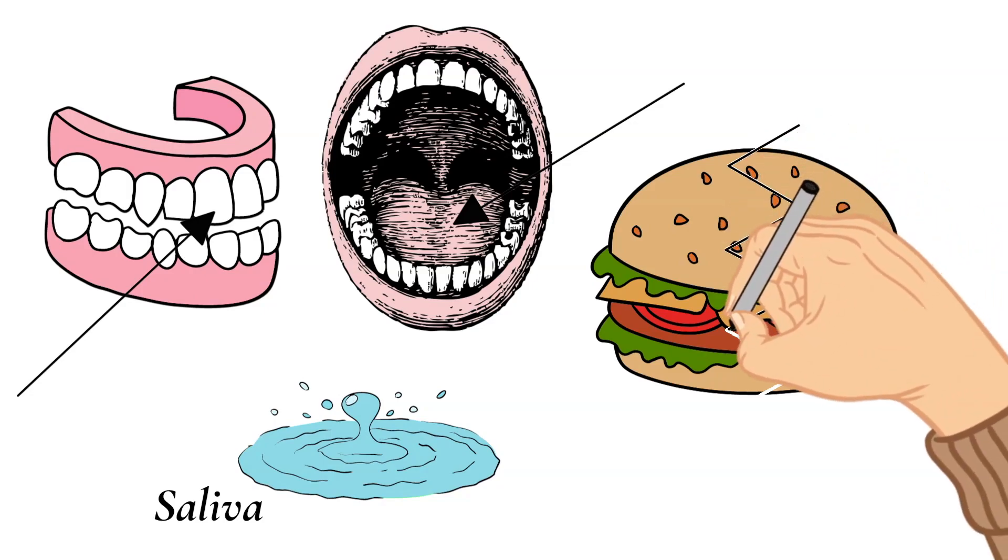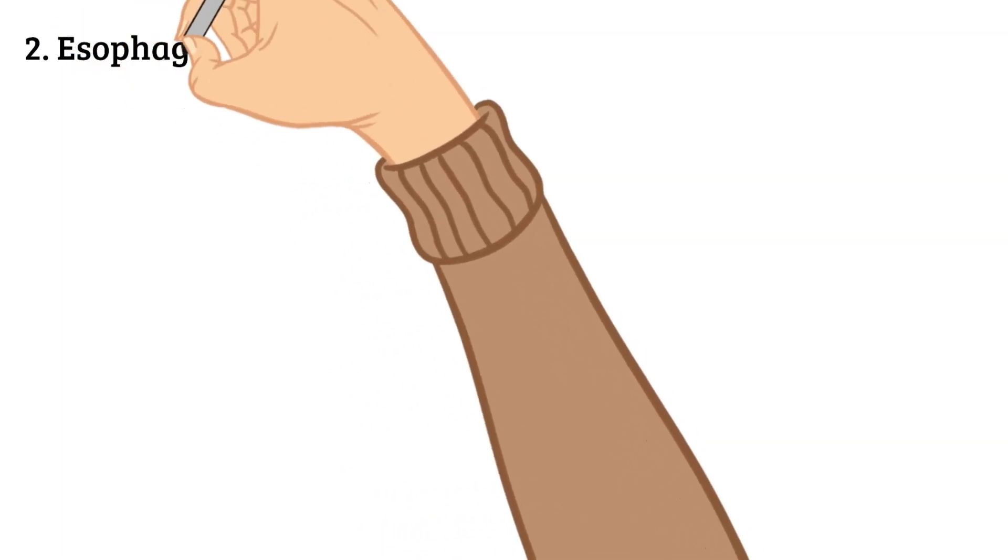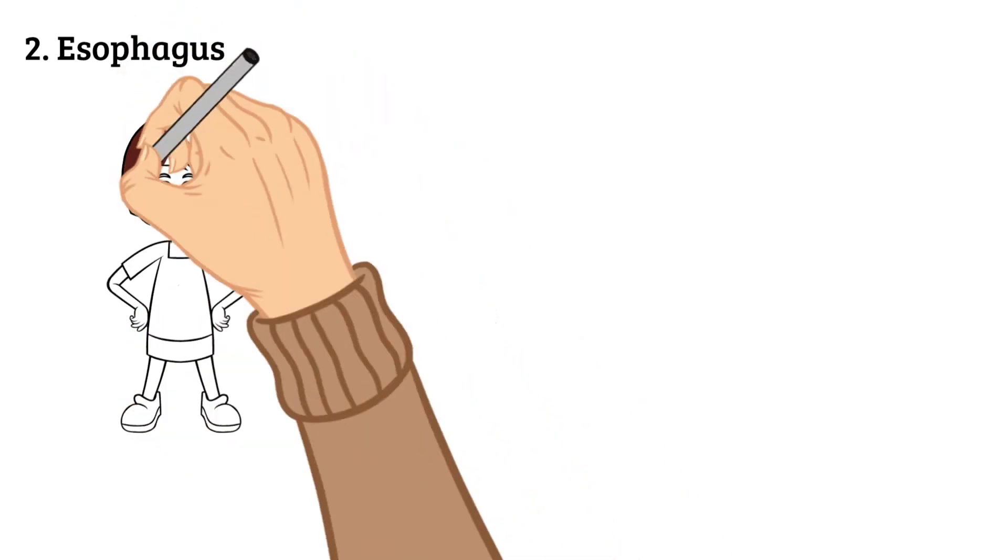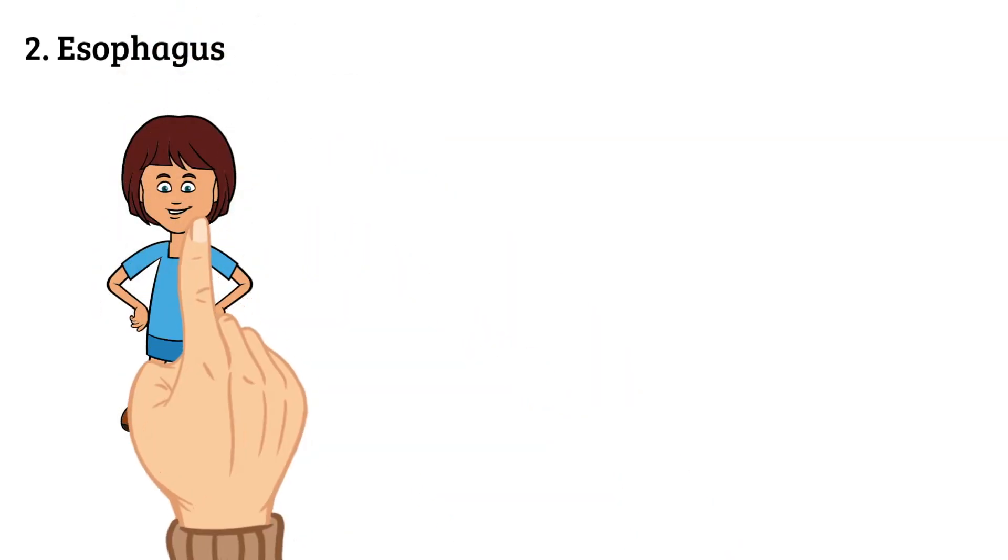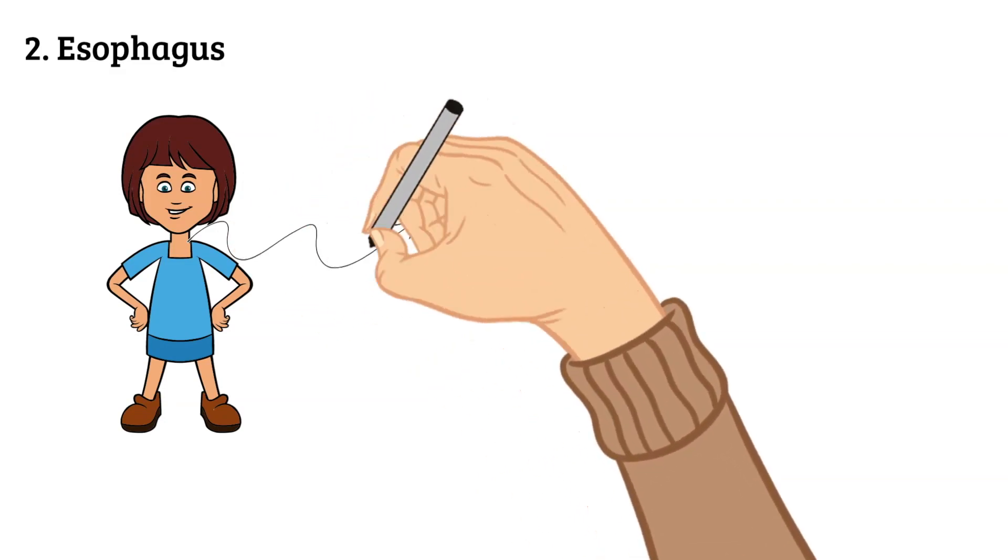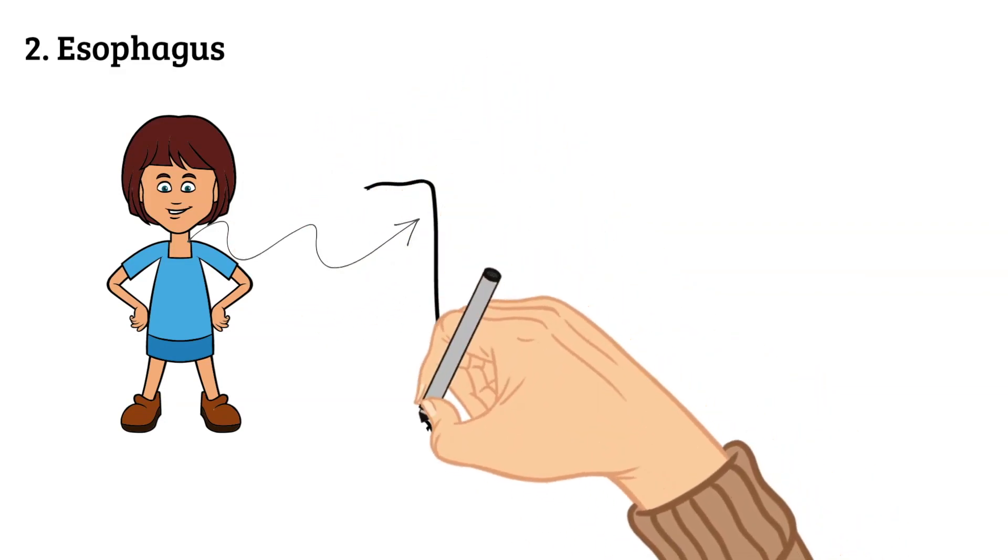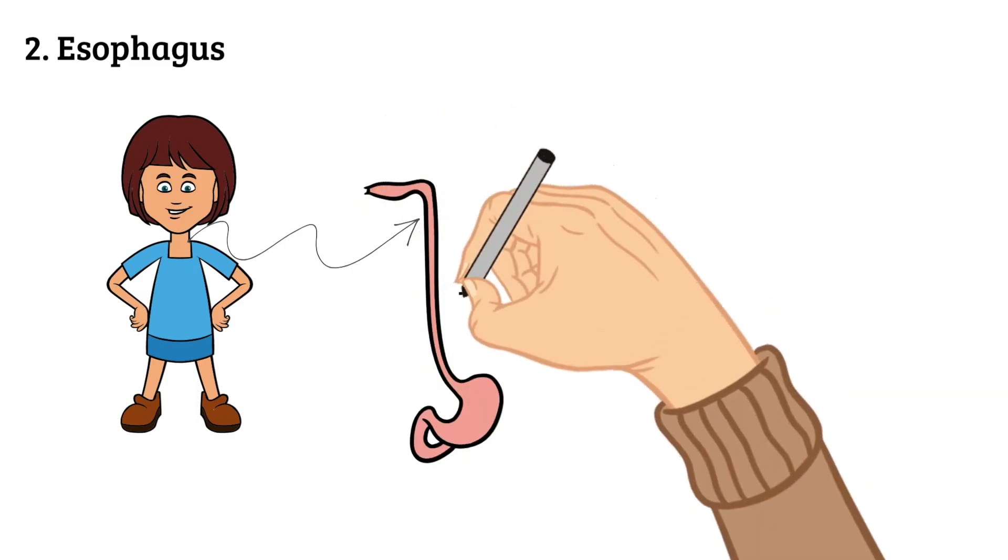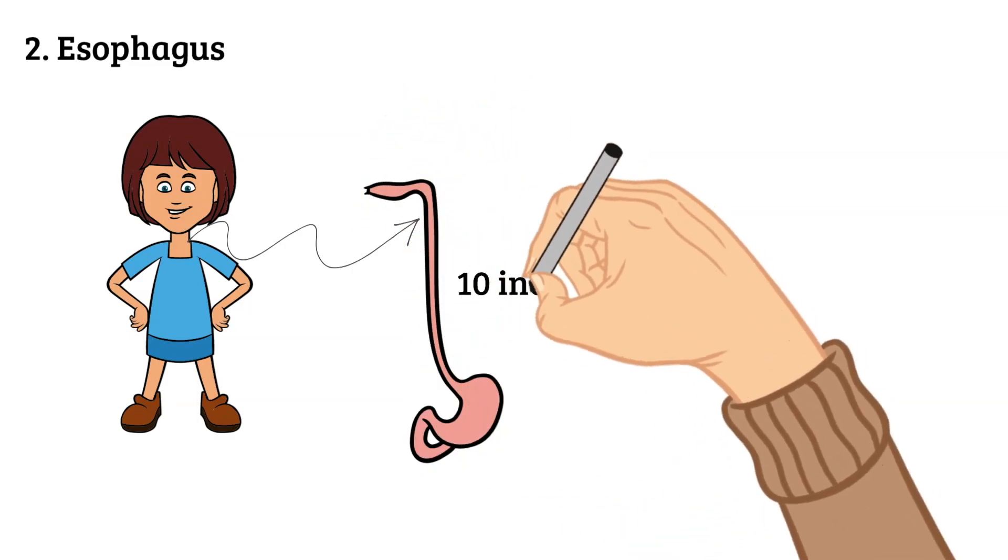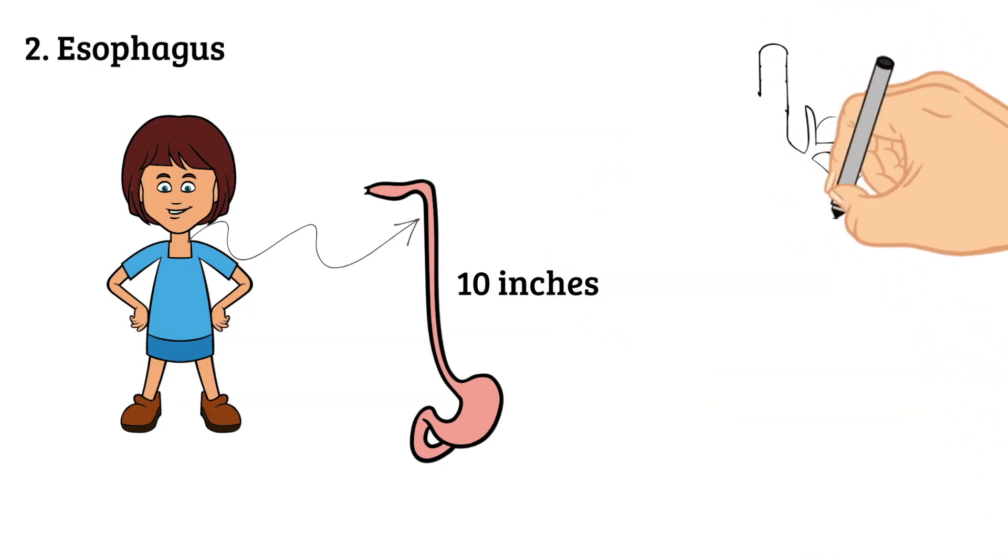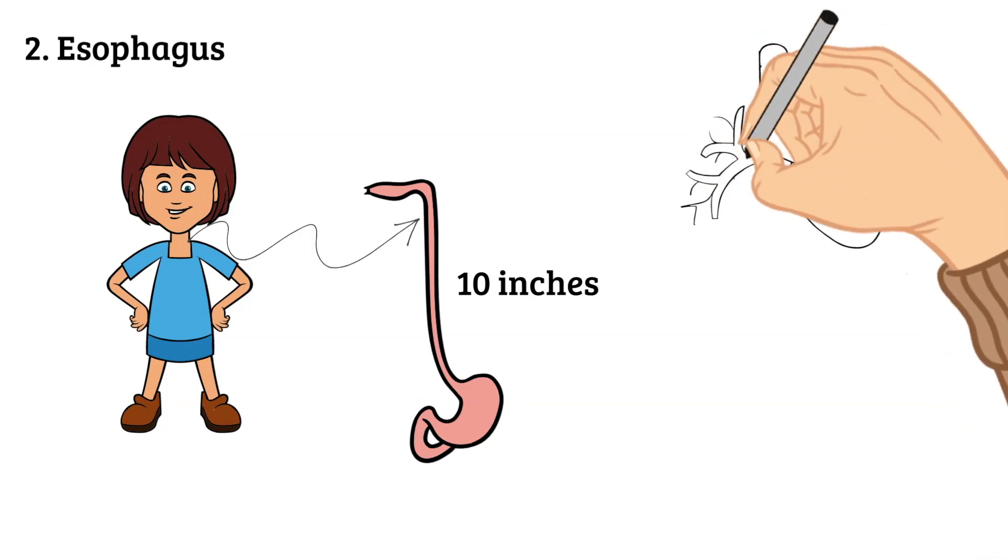Next up is the second step in our digestion, and this is the esophagus. The esophagus is a pipe that stretches from your mouth to your stomach. It is about 10 inches long. Your windpipe is also located at the back of your throat.